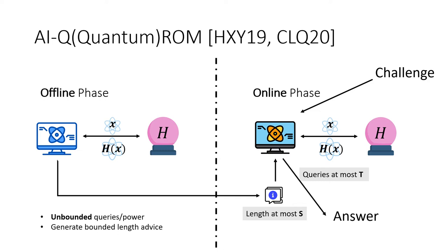It is also natural to define aux-input quantum random oracle model, where both the offline and online algorithms can be quantum, and advice can be either classical or quantum. In this work, we are particularly interested in the case where the advice is classical and the algorithm is quantum.